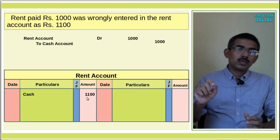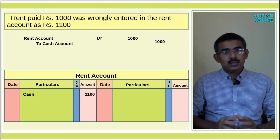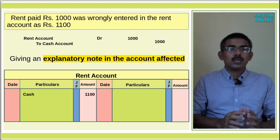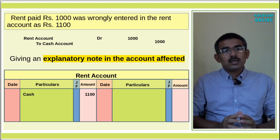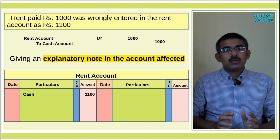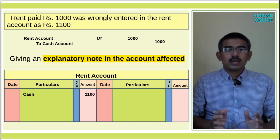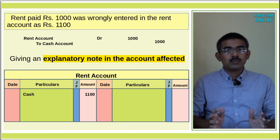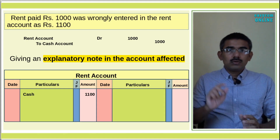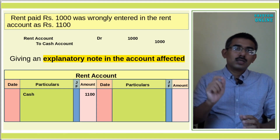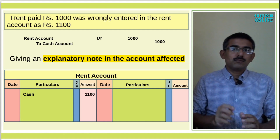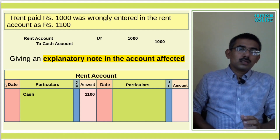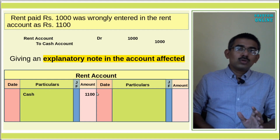The first method we will use is to give an explanatory note in the affected account. The account can be rectified using an explanatory note. The debit side of cash is Rs.100 to be rectified.